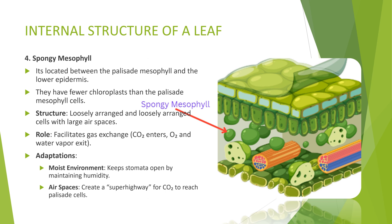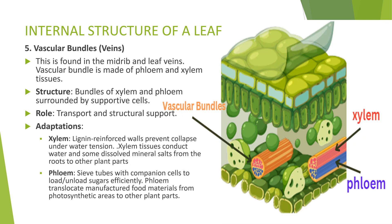5. Vascular bundles: inside the leaf, vascular bundles consist of xylem and phloem tissues surrounded by supportive cells. Xylem, with its lignin-reinforced walls, prevents collapse under water tension and conducts water and dissolved mineral salts from the roots to other plant parts. Phloem, with sieve tubes and companion cells, loads and unloads sugars efficiently and translocates manufactured food materials from photosynthetic areas to other plant parts.